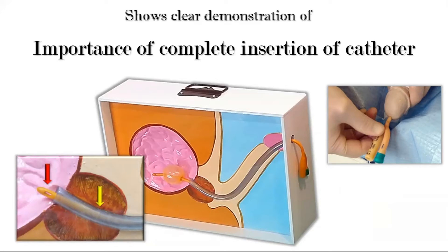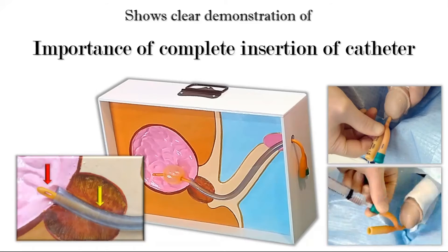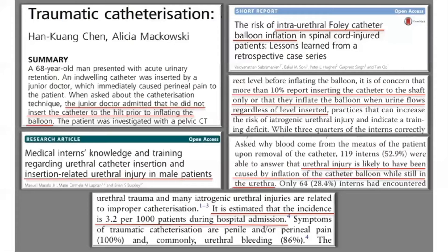Inflation of the balloon at this stage will cause serious injuries to the urethra. So regardless of the age, height, and weight of the patient, the balloon should be inflated only after complete introduction of the catheter inside the male urethra. This rule is supported by multiple publications from all around the world, which have highlighted the seriousness of this injury and the importance of proper training for students.